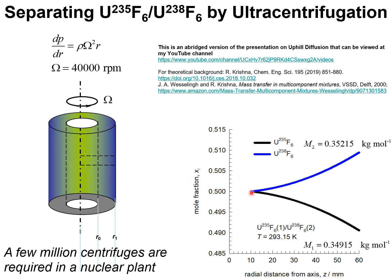The compositions at the periphery would be richer in the heavier isotope because the heavier isotope experiences a larger effect of the centrifugal force.